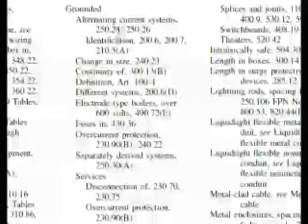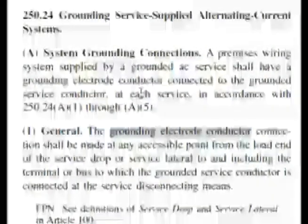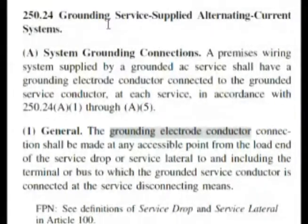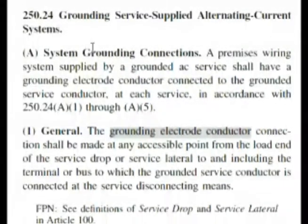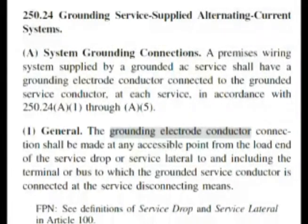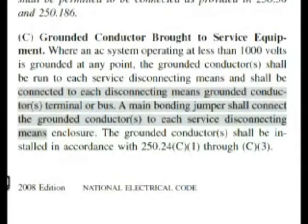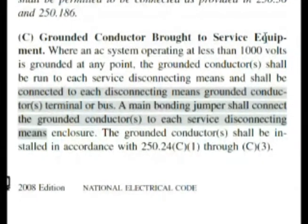Let's look at 250.24 and 250.26 to see what we can get out of those. Now remember, our answer choices include those sections. Our best approach is to start scanning down and looking at the bold headings as we go through. As we go down this section of the code reading the bold headings, we come across letter C: Grounded Conductor Brought to Service Equipment — which was the first wording in our question. So this looks like a good place.